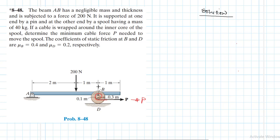This particular spool tends to rotate counter-clockwise. The question is to determine the minimum cable force P needed to move the spool. So we've determined how this spool is going to rotate, but how is it going to move? Will it go to the right or will it go to the left? As it rotates counter-clockwise, you expect the spool to go to the left. It has to go to the left. But as it moves, we need to be mindful of the slip.